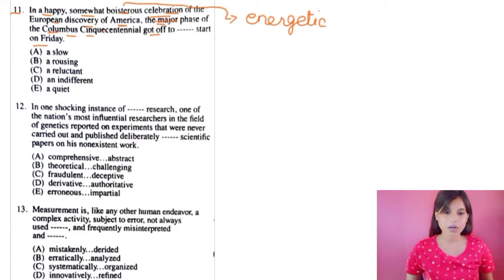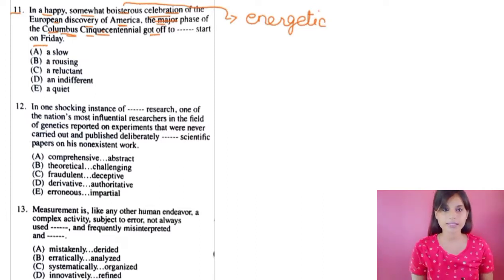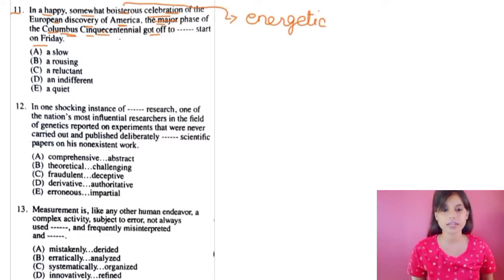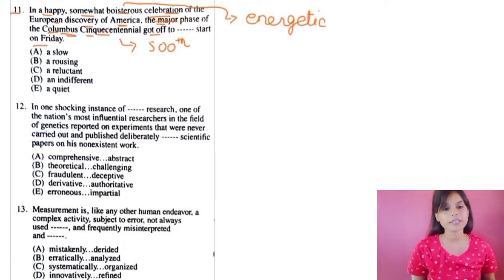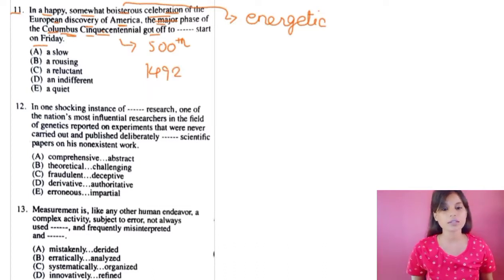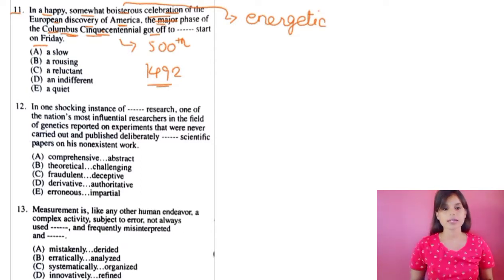Columbus Cinquecentennial refers to an event that took place in 1992 — it was the 500th anniversary of Christopher Columbus's 1492 arrival in America. So this was the celebration of that arrival. We have to put the correct word one by one to make the sentence complete.